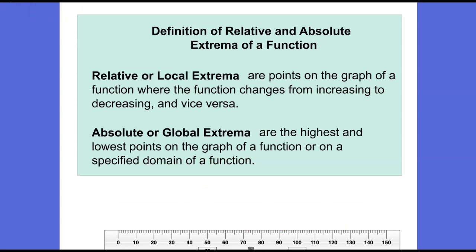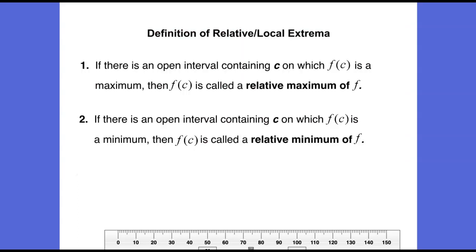Relative or local extrema are points on the graph of a function where the function changes from increasing to decreasing and vice versa. Absolute or global extrema are the highest and lowest points on the graph of a function or on a specified domain. To find relative or local extrema, identify an interval containing x equals c where f of c is the relative max — where the graph changes from increasing to decreasing — or relative min — where it changes from decreasing to increasing.